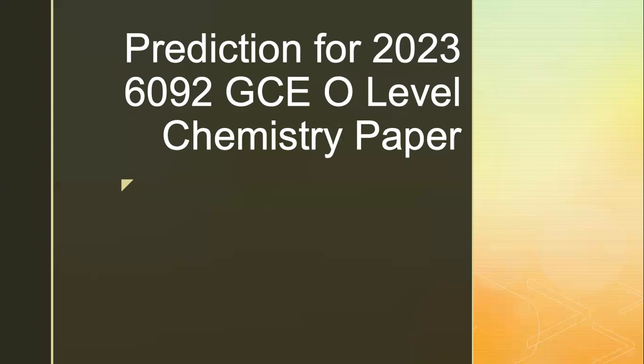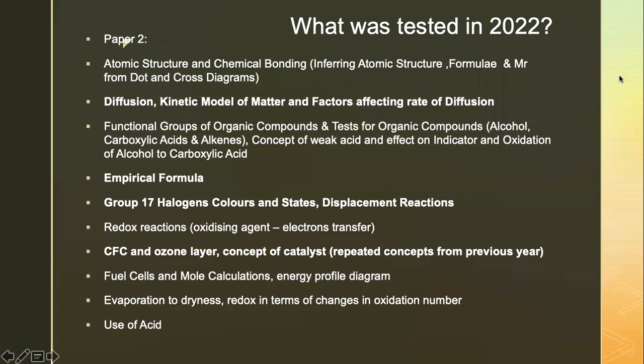For example, CFC and the bonding and structure of graphite were tested again last year. Here is a summary of the various concepts and topics tested in 2022. For paper 2, which is our focus — I'm not going to focus on paper 1 — because paper 1 will best be predicted based on what came out in paper 2. For example, some of the more calculation questions and the concepts in metals were not tested in paper 2; they were tested in paper 1.